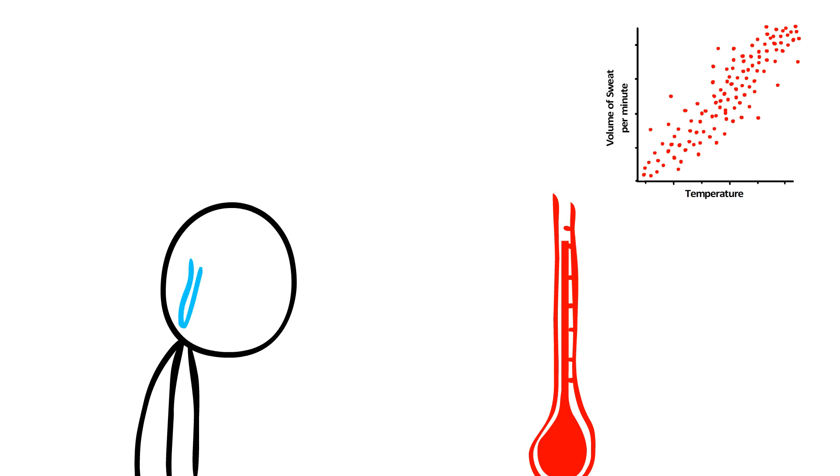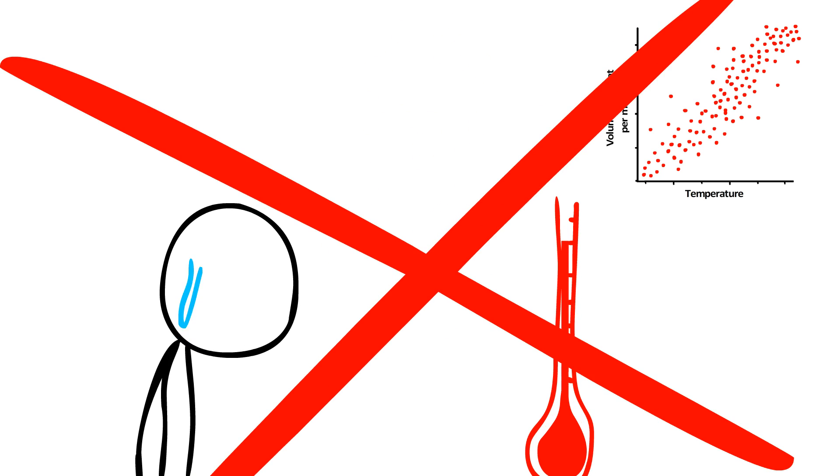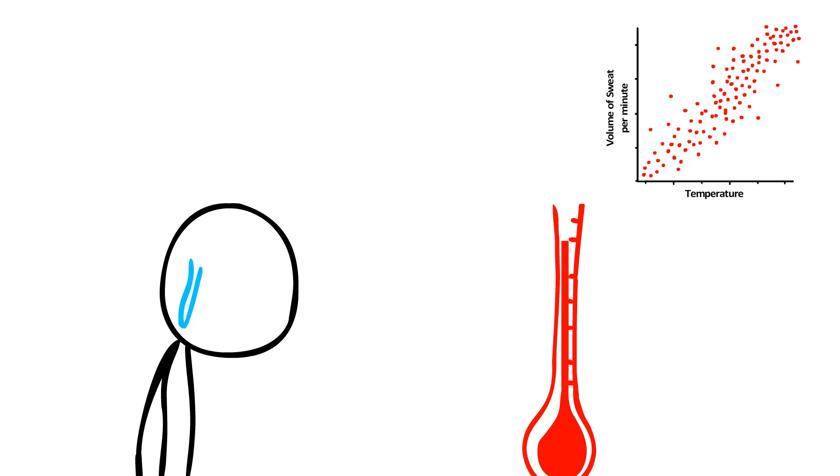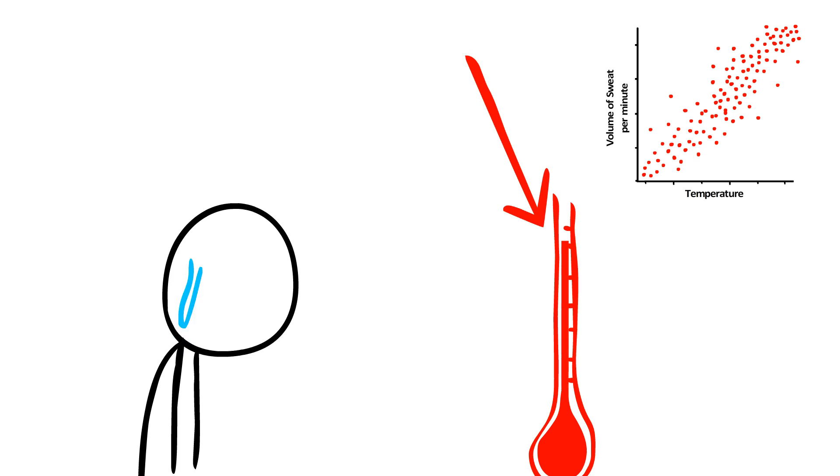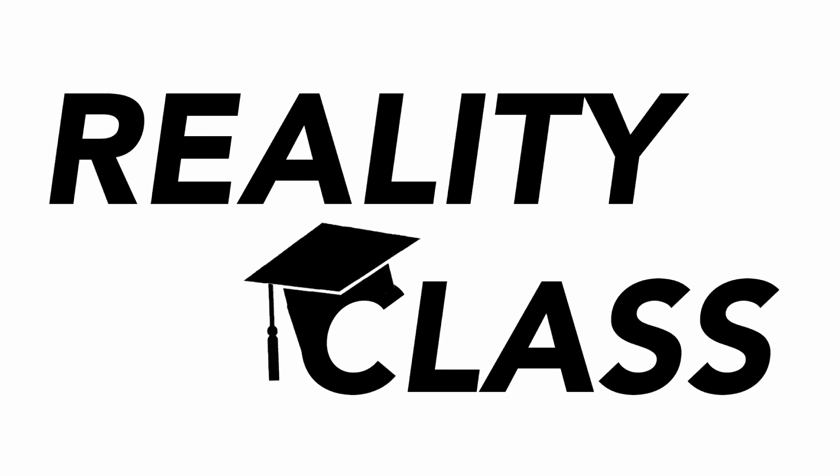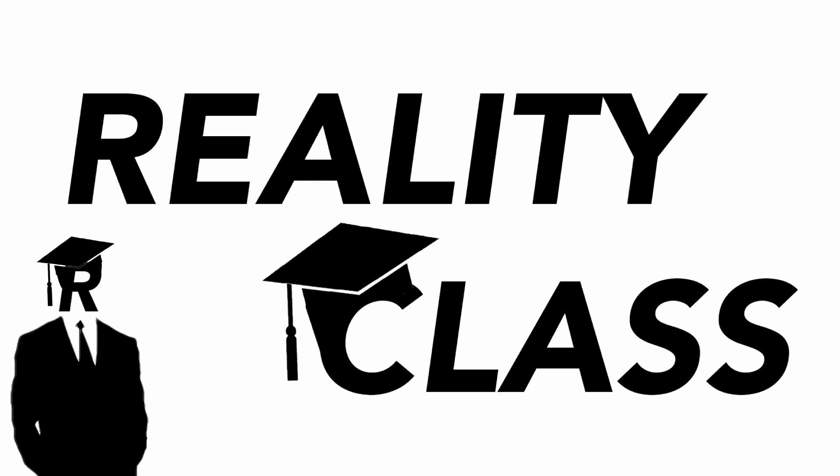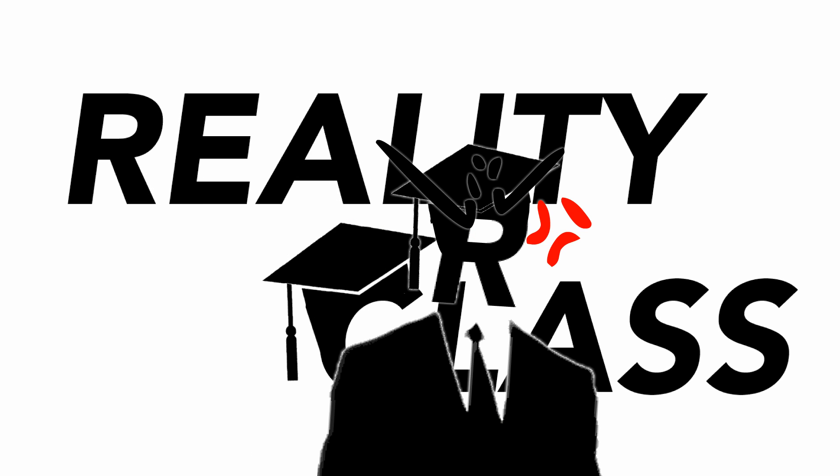Bottom line, correlations don't tell you jack about why the variables are related. It just tells you how accurately you can predict one variable from another. So, if you ever see anyone presenting a correlation as evidence of a causative relationship, correlate your hand with their face and give them a slap!